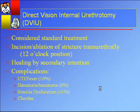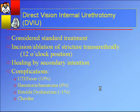DVIU is essentially an incision or ablation of the stricture, generally at the 12 o'clock position — not an ideal position because 12 o'clock in the bulbous urethra is the most narrow, with the least distance between the urethral lumen and outside of the sponge. If you're aggressive, you can quite easily get outside of the urethral lumen and cause a hematoma and the theoretical risk of erectile dysfunction. Some have argued the three and nine o'clock positions would be better. What it boils down to is healing by secondary intention — the race is on between wound contracture and epithelialization.